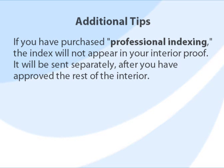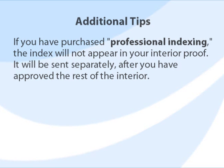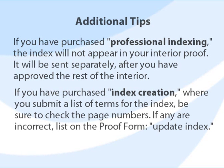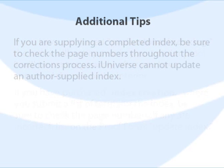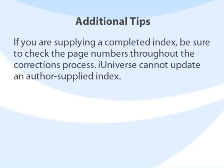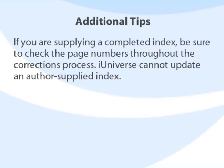If you have purchased professional indexing, the index will not appear in your first proof copy. Once you have approved the interior, the index will be created and sent separately for you to review. If you have purchased index creation, where you supply a list of terms and we complete the index, please check the index to make sure the page numbers are accurate. If they are not, you do not need to list each incorrect page number on the proof form — simply include on the form that 'index needs updated.' If you are supplying your own completed index, it will be your responsibility to review and update the index whenever changes are made in your interior. We cannot update an author-supplied index.